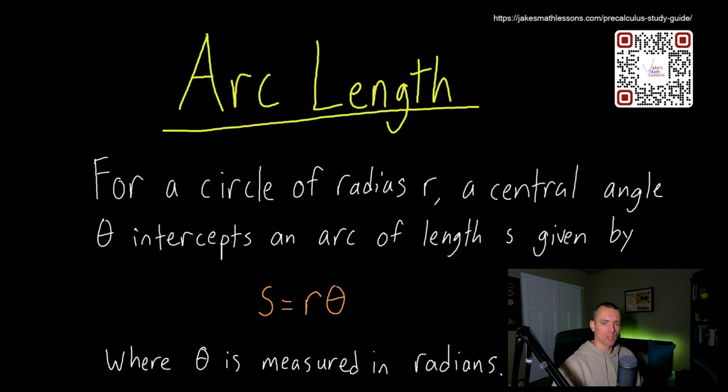Hey guys, Jake here coming at you with another math lesson today. We're going to be talking about how to find the arc length of a circle when you're given a certain circle with a given radius and you're looking at a portion of that circle, basically like a pie slice of it with a certain angle.